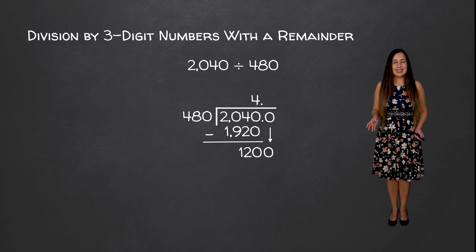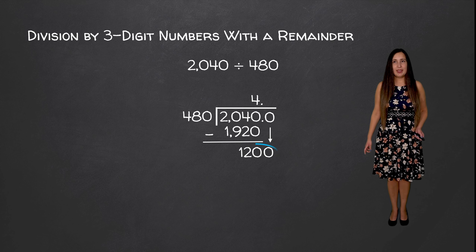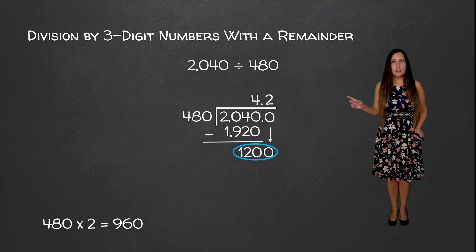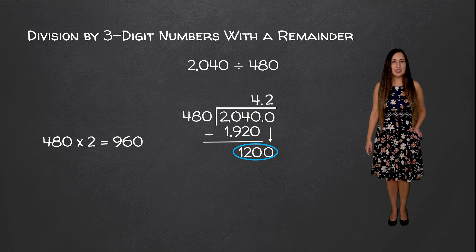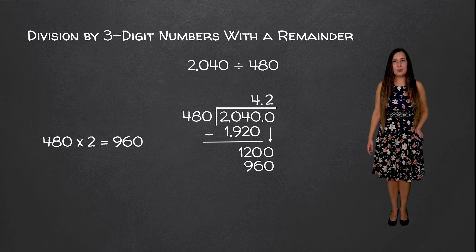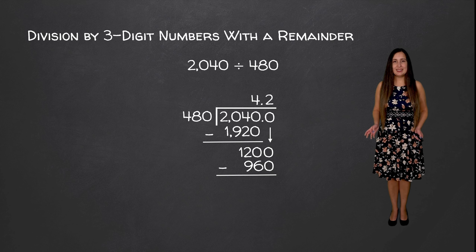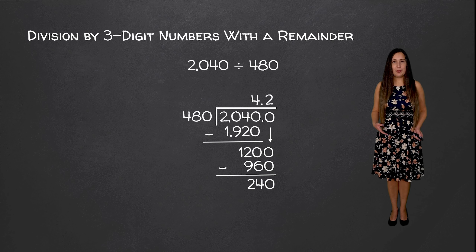Now we want to see how many times 480 goes into 1200. It goes in two whole times, because 480 times 2 is equal to 960. So we're going to write that down and subtract these two values. 1200 minus 960 is equal to 240.